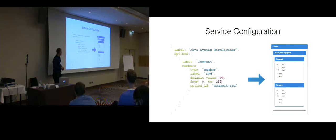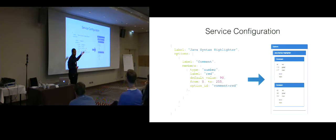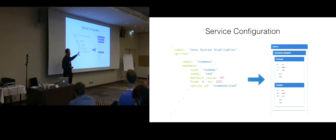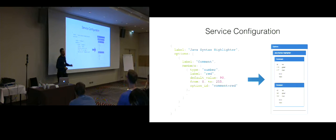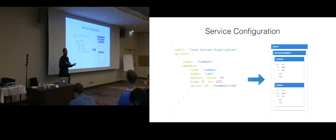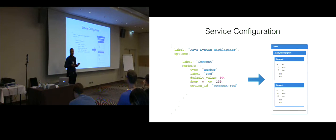Here is the example of the intermediate representation for service configuration. Service configuration can be used to adjust syntax highlighting for a service, for example. The intermediate representation is independent from each service — we support a variety of configuration options like number options, checkboxes, and so on, which we also derive from HTML forms.